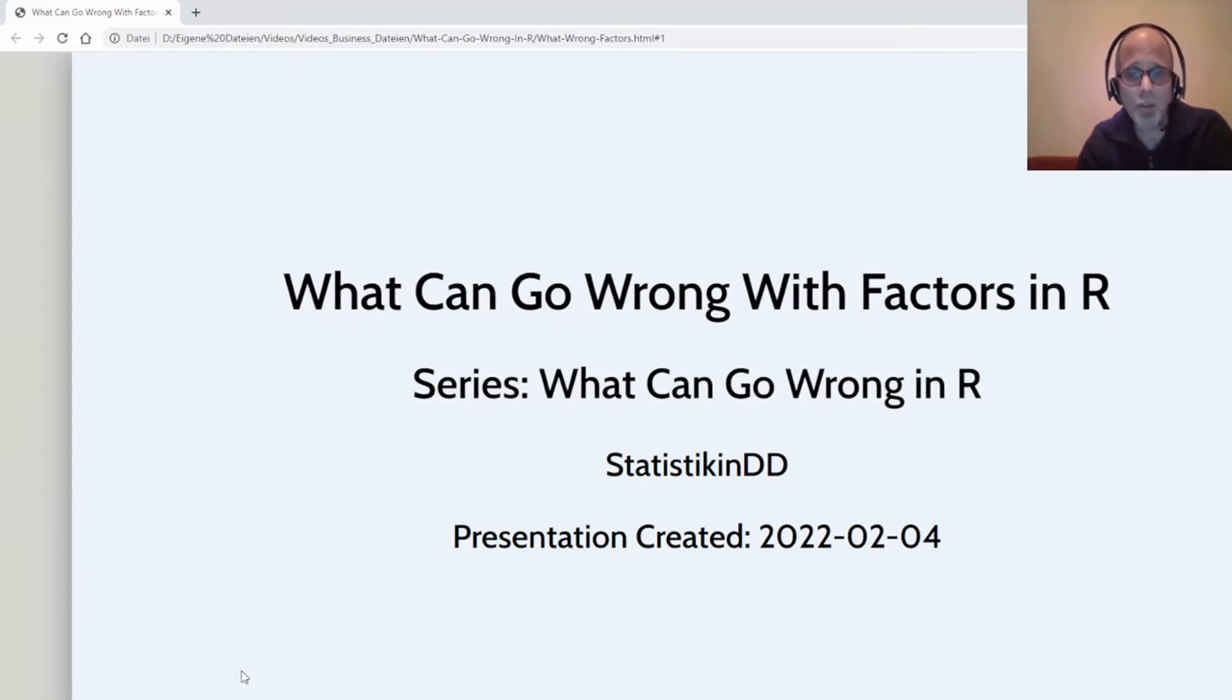Factors are a data structure in R for categorical data with a predefined set of categories called levels. A couple of things can go wrong when dealing with factors, and we'll look at a few examples.